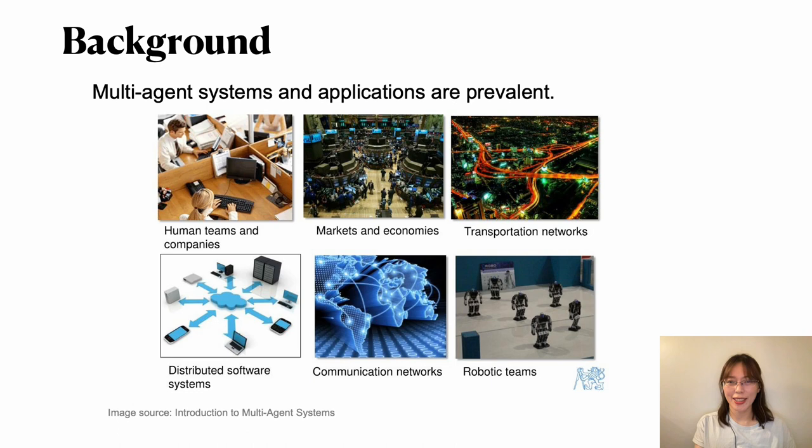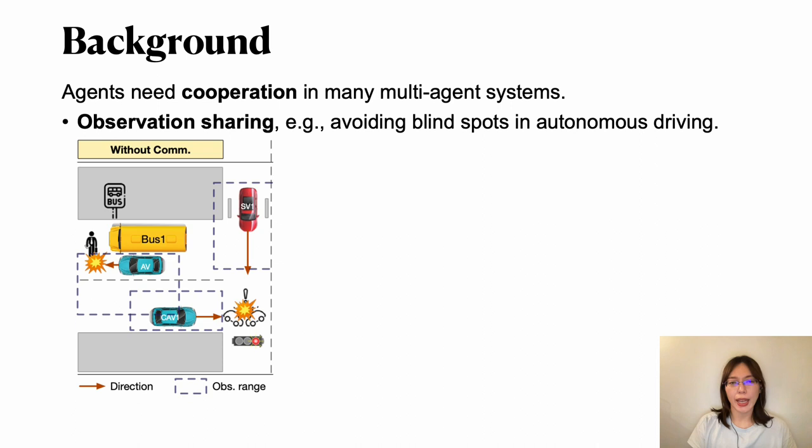It's well known that multi-agent systems are prevalent, which exist in many domains such as human teams, markets, economies, transport, software systems, communication networks, and robot-centric teams. Given agents have limited capacity, such as observation range, agents are motivated to cooperate with each other to achieve more complex tasks.